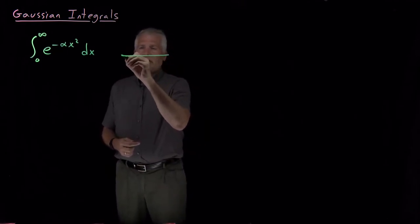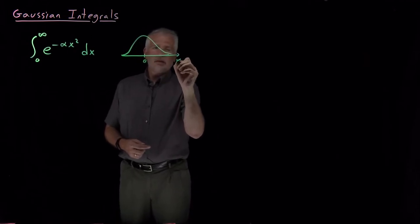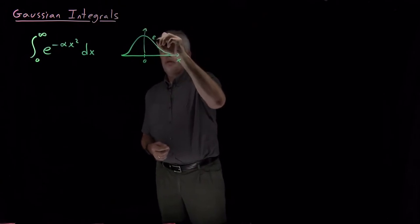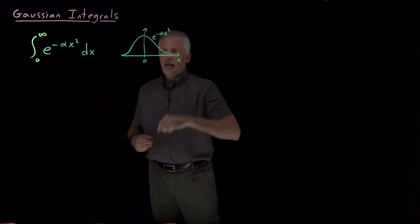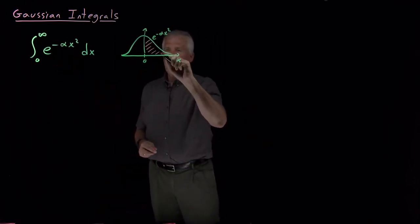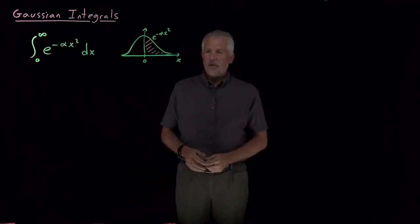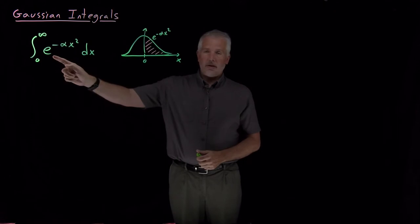Just so that we have a visual picture of what this integral is doing, a Gaussian function e to the minus alpha x squared has this general shape. If we've asked for the integral from zero to infinity of that function, that's the area under this integral on the right side of the y-axis.